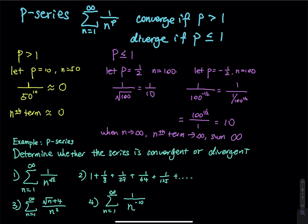The p-series. We are focusing on the power. We have a series of 1 divided by n to the p. This series is convergent if p is greater than 1, and diverges if p is less than or equal to 1.